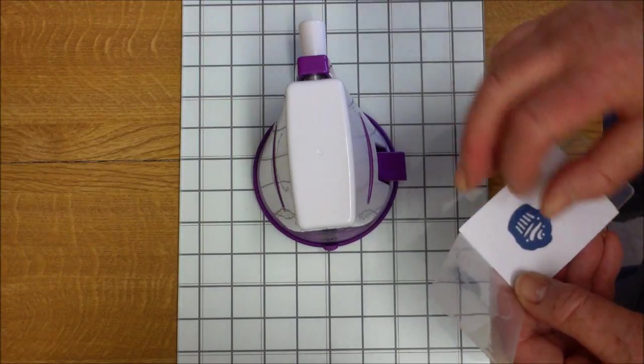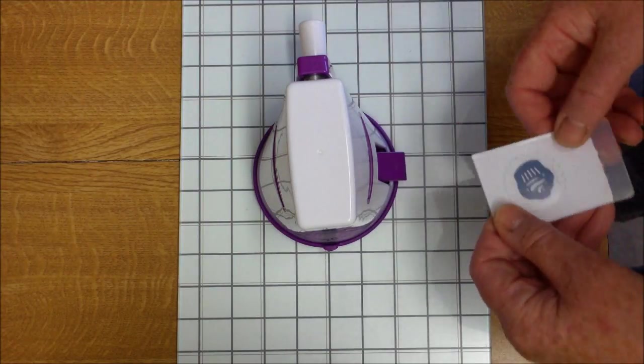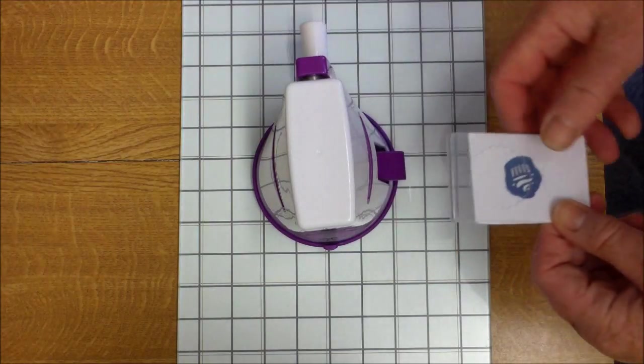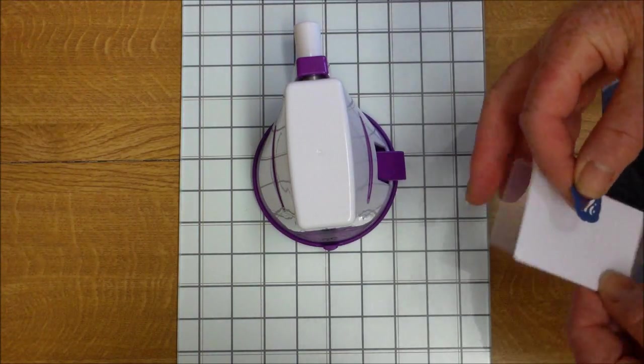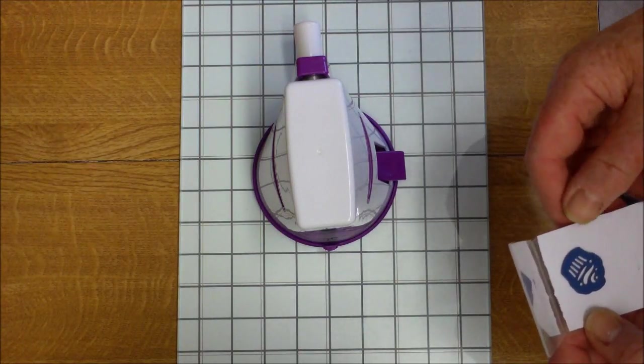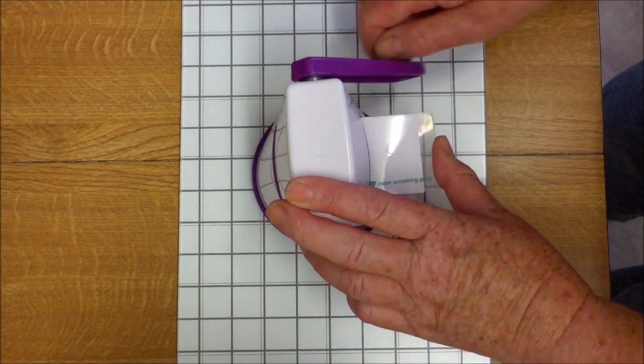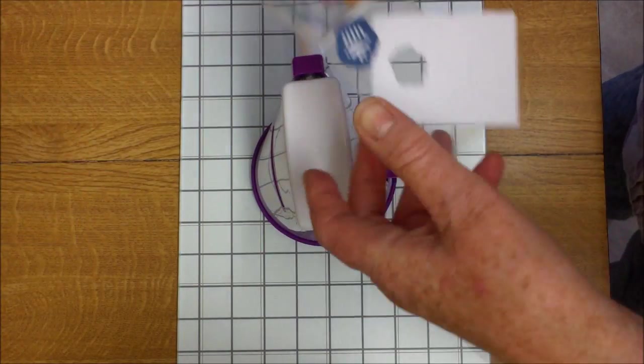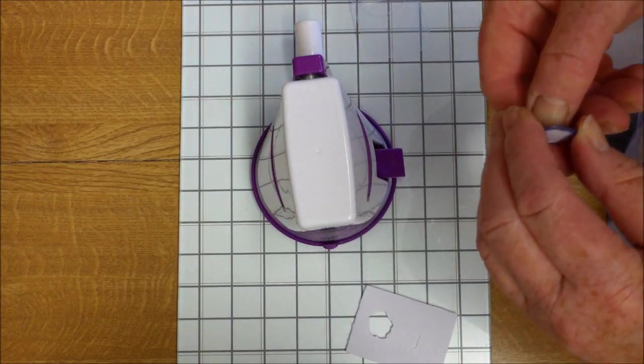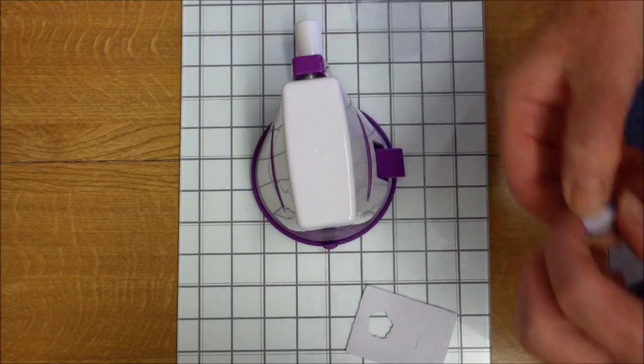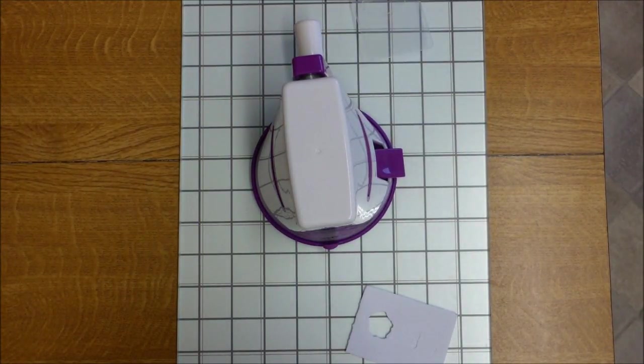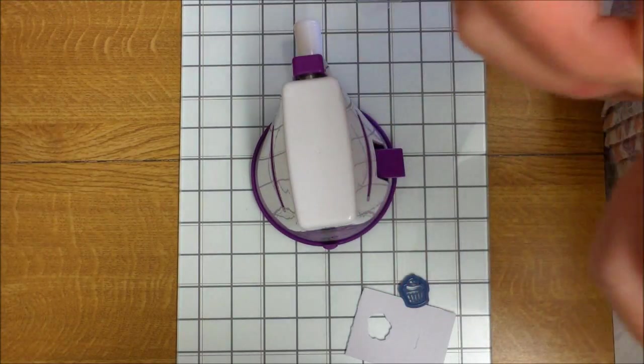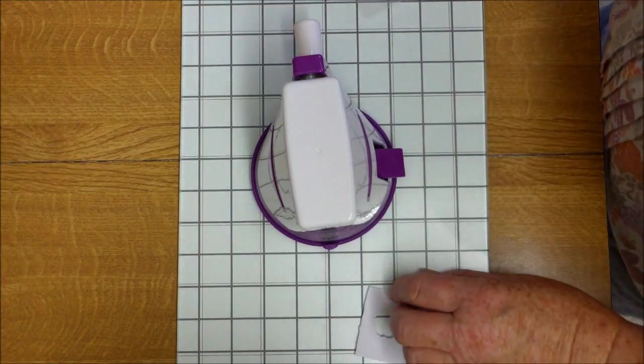I will try another die. This time it's a Spellbinders die. And it doesn't like it very much either. Well, it went through. It's cut it. And it's cut it, but you can't really see any embossing on it.